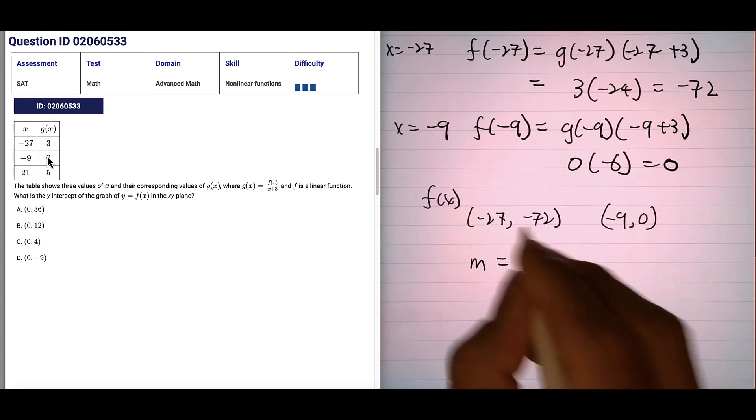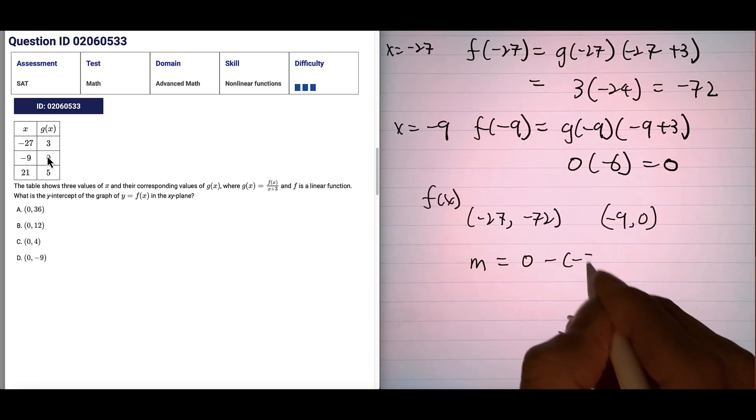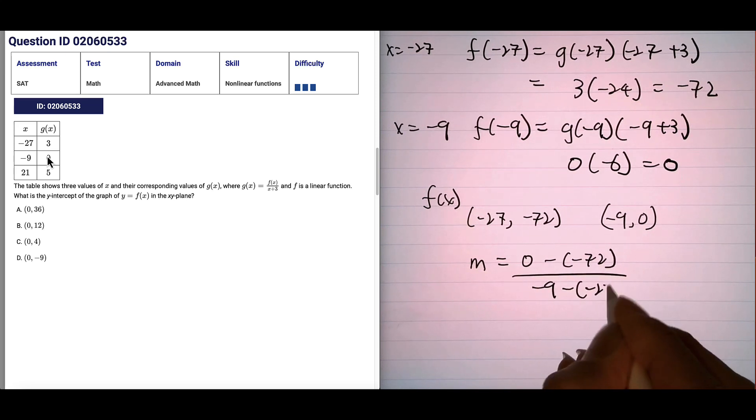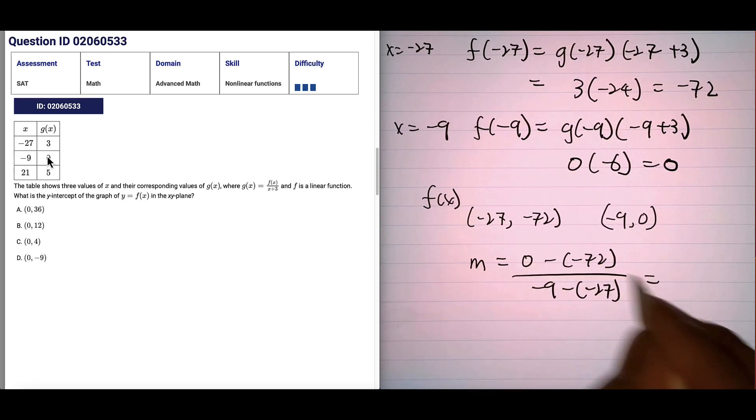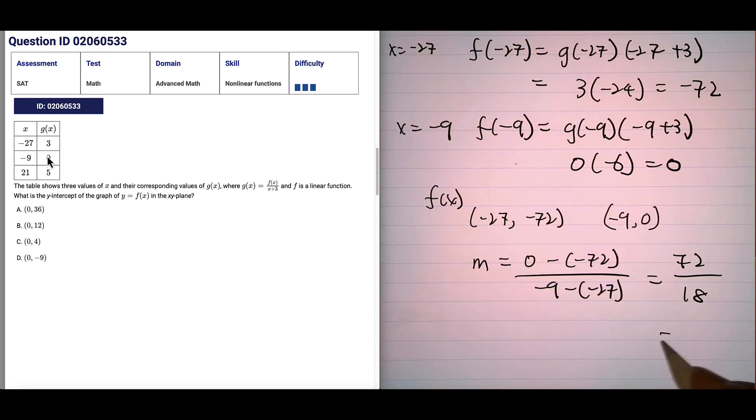The slope would be y2 minus y1 over x2 minus x1. So I can say 0 minus negative 72 over negative 9 minus negative 27. So on the numerator we get positive 72. On the denominator, 27 minus 9 will give us 16, I'm sorry, it's 18, my bad. 18. And we get a slope of 4.